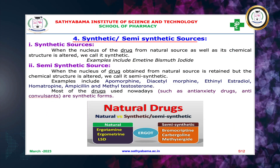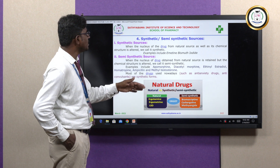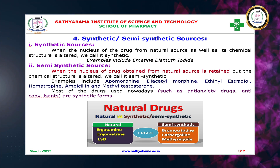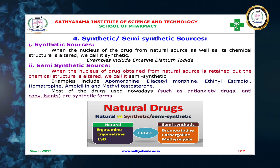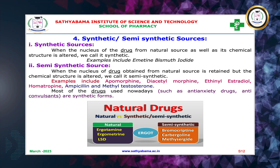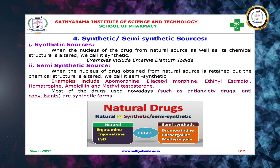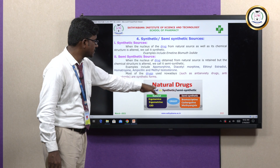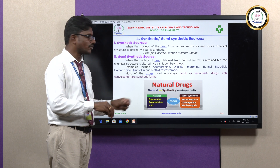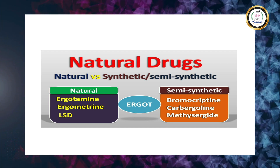Synthetic and semi-synthetic sources: when the nucleus of the drug from a natural source as well as its chemical structure is altered, we call it a synthetic drug. Semi-synthetic means when the nucleus of the drug obtained from a natural source is retained but the chemical structure is altered. Examples include apomorphine, diacetylmorphine, ethyl estradiol, homatropine, ampicillin, and methyltestosterone. Most drugs used nowadays — such as anti-anxiety drugs and anti-convulsants — are synthetic drugs. For example, ergotamine is a naturally obtained drug from the plant ergot, and it is converted into bromocriptine and other forms, which are semi-synthetic.